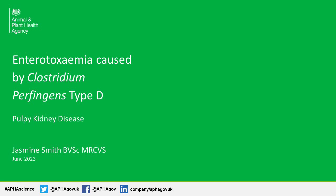Jas graduated in 2015 and worked in farm practice for seven years throughout the UK before joining APHA Penrith as a veterinary investigation officer in 2022. Today, Jas is going to discuss pulpy kidney disease in sheep. Jas will run through enterotoxemia caused by Clostridium perfringens type D in a lamb, also known as pulpy kidney disease.